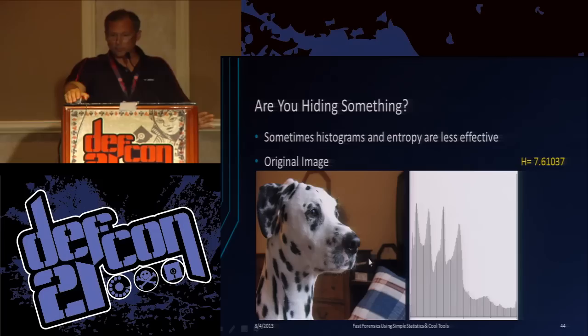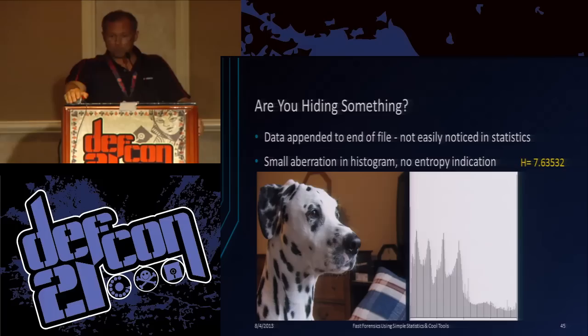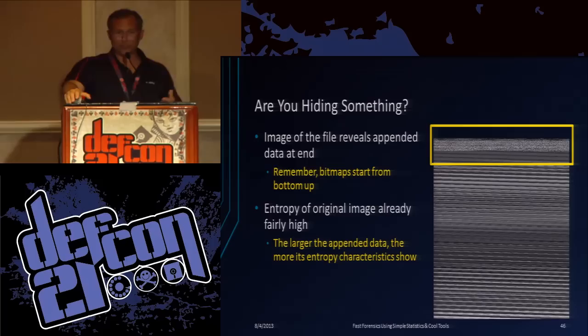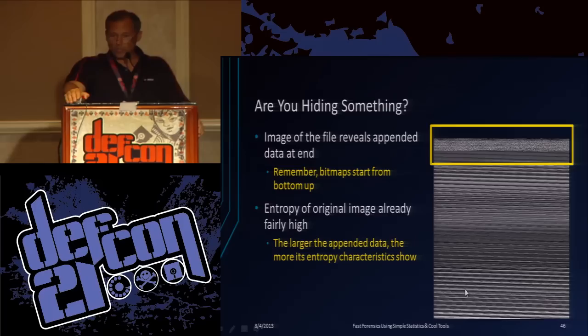Histograms and entropy aren't always effective. This is the full-color bitmap you saw earlier. You see how it's fairly smooth. Let's see if we're hiding something - data appended to the end of the file. Statistics don't really tell you a lot about it. However, if you look at the histogram, you can see that. That's kind of unusual for a 24-bit bitmap to have these kind of spikes in there. Some of that just comes from experience. You can see some data hiding at the end because that's got a different characteristic there. So that can reveal something.